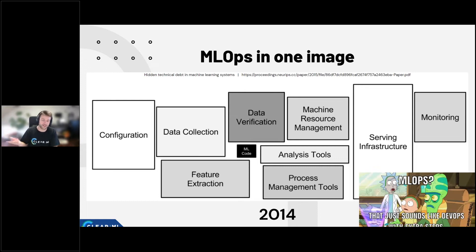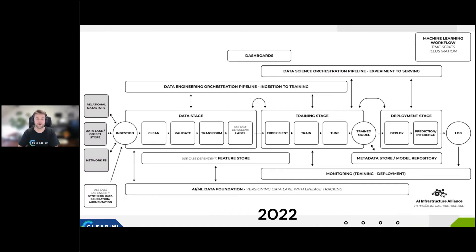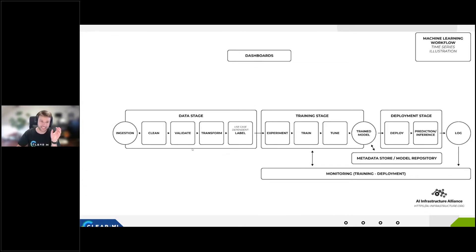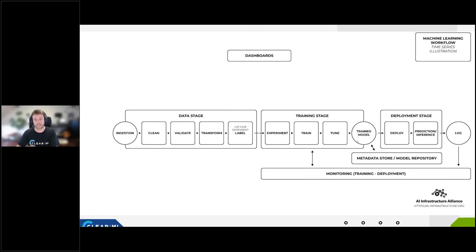It just sounds like DevOps with extra steps at that point. This is 2022 — there's the AI Infrastructure Alliance, which ClearML is part of. The idea is to map out how these interconnected systems look today and how the tools available map onto that. We'll set aside the overwhelming complexity and focus on the main stages: the data stage, the training stage, and the deployment stage. Those are what I want to focus on today.